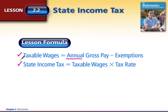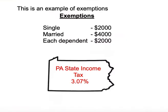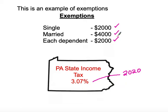There's not a tiered level like federal income tax — it's simply taking that taxable wage and multiplying it by the tax rate. Here in Pennsylvania our tax rate is 3.07% for state income tax, as of 2020. For exemptions: if you are single you can subtract $2,000 from your yearly earnings; if you are married, $4,000; and with every dependent you claim it's an extra $2,000. So a married family with two children would claim $4,000 for being married plus $4,000 for two children, totaling $8,000.